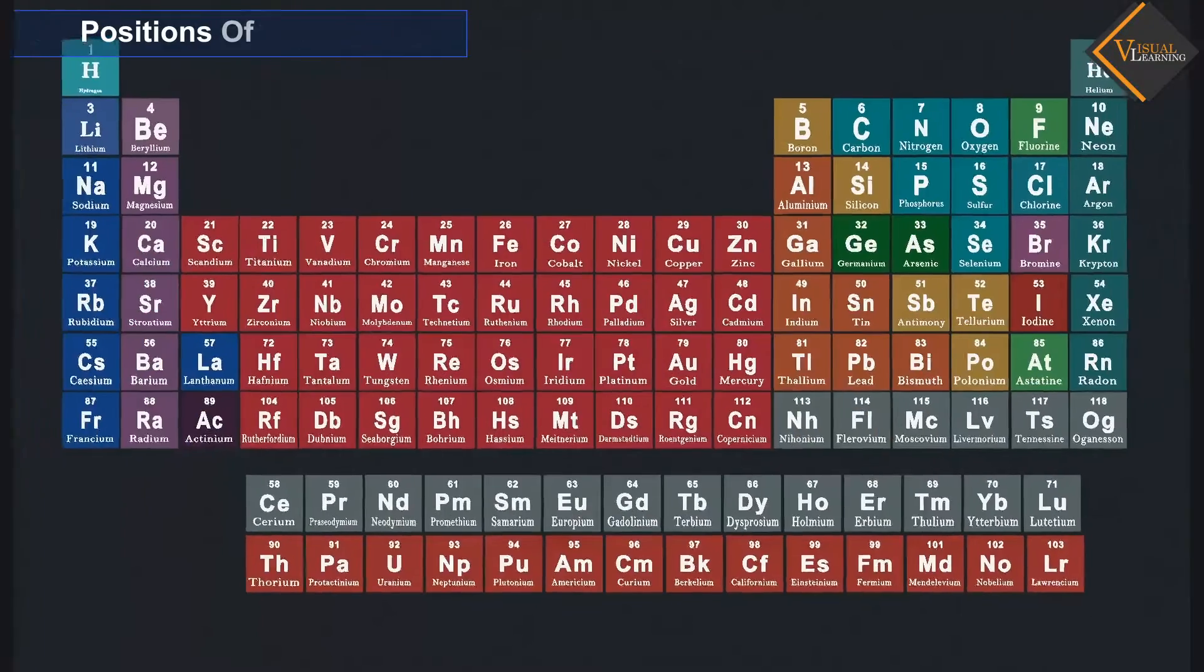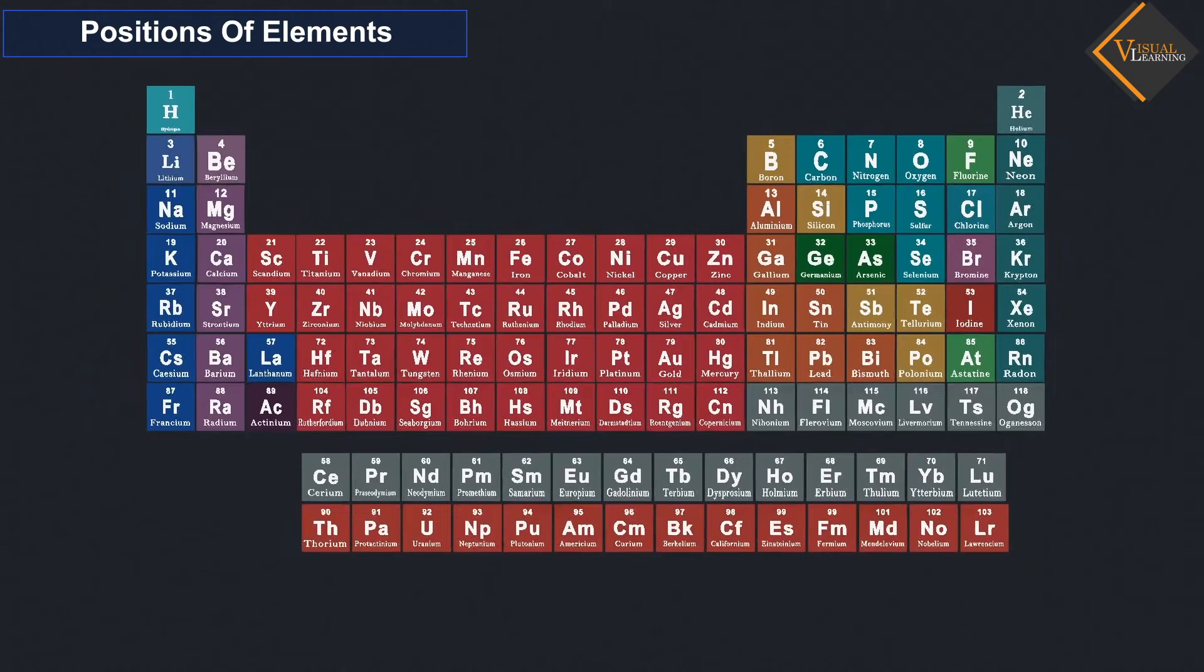Position of elements in the Modern Periodic Table: The Modern Periodic Table has 18 vertical columns known as groups and 7 horizontal rows known as periods.